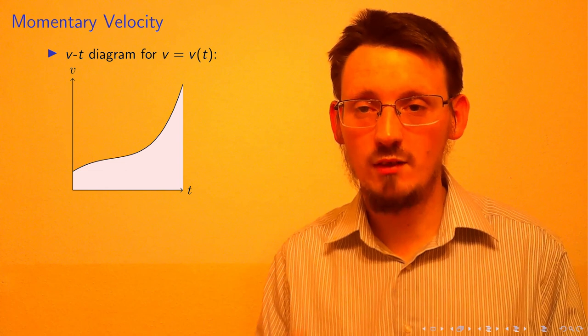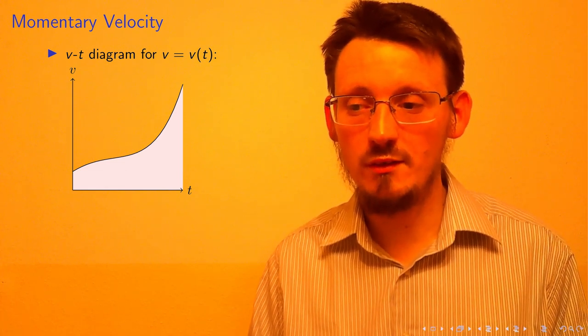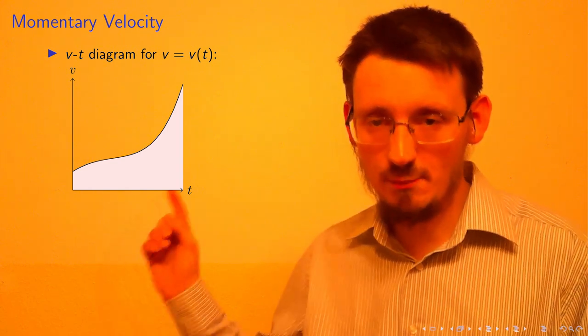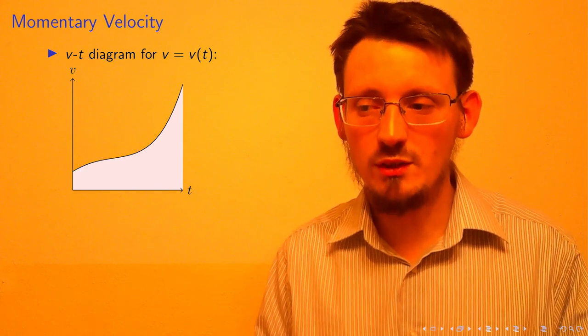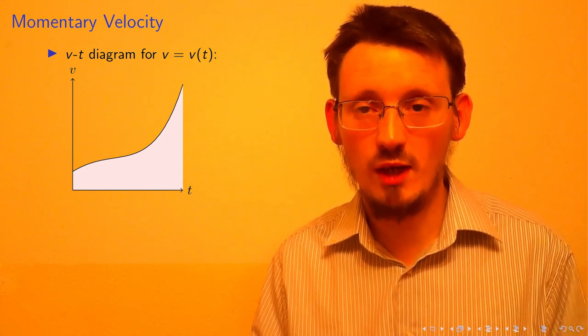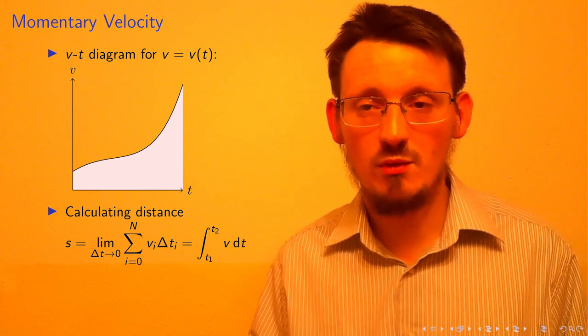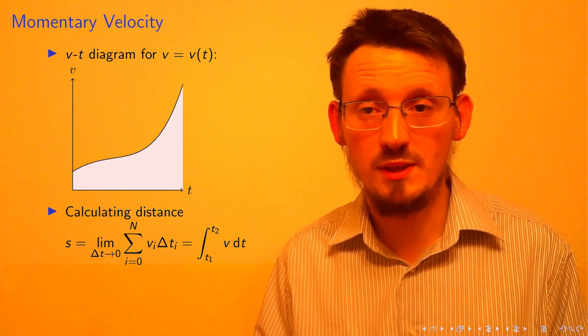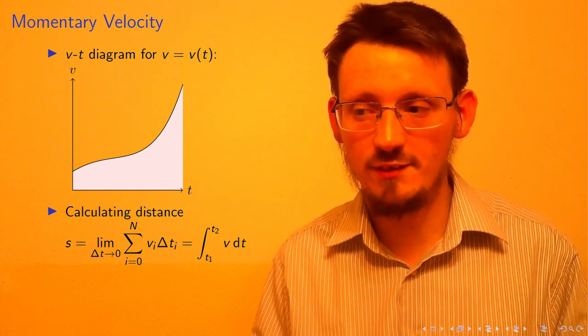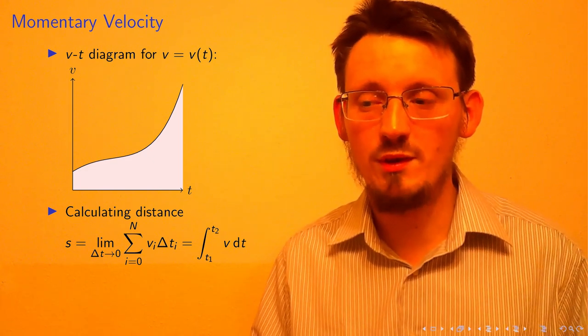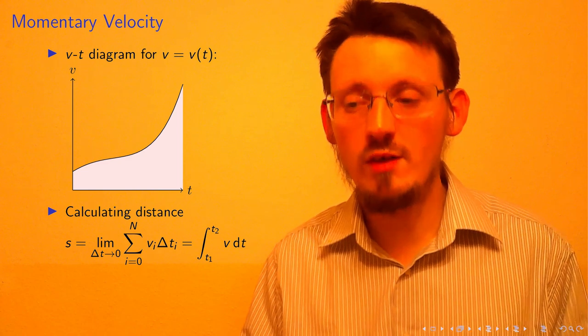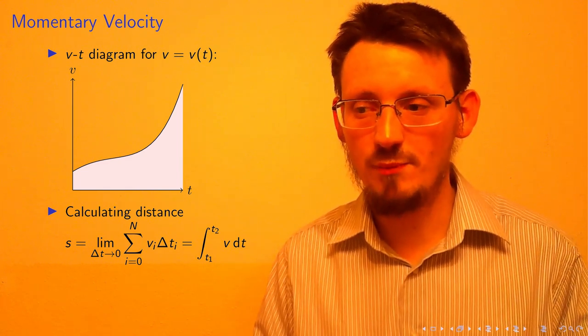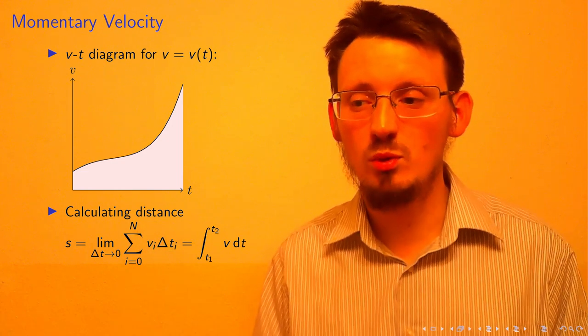Because then, the Vt diagram looks, for example, as presented here, for just an arbitrary function V only of T. If we stick to the interpretation that the distance is the area under the graph, then we can just divide this area into a specific number of n small pieces with the width delta T. And if we make this very, very small, then at the end, we have to sum up all these small areas in order to get the complete area. If we make these intervals very, very small, which means basically infinitesimal small, then this sum here turns into an integral.